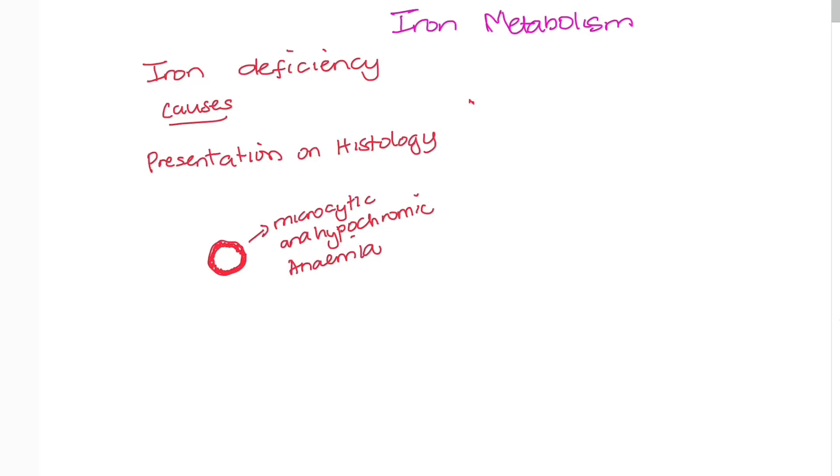On histology, when you do a blood film in severe iron deficiency, you will find that the cells are smaller than normal red blood cells, which is microcytic. Also, there is usually a central area of pallor that is usually two-thirds the size of the red blood cell in normal patients. However, as you can see, it is expanding in this picture, so it is much greater than the normal pallor. This is called hypochromic anemia. Chromic means color, so it's hypochromic. That's it for this video, see you in the next one, goodbye.